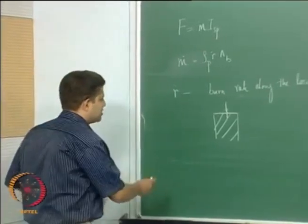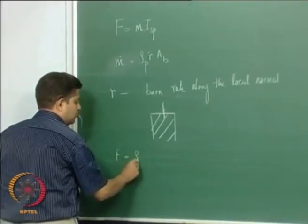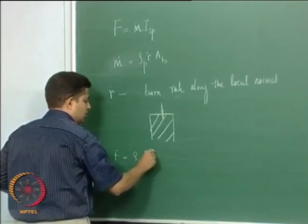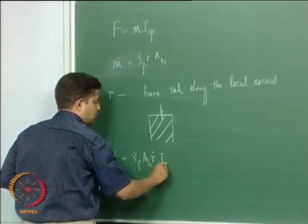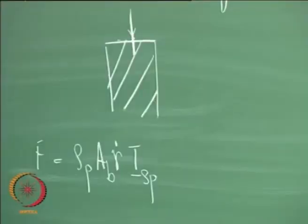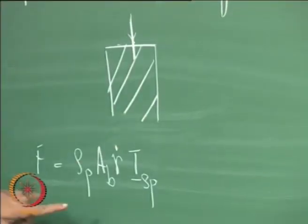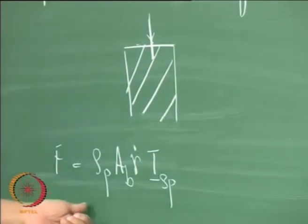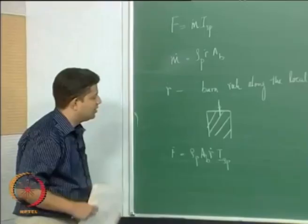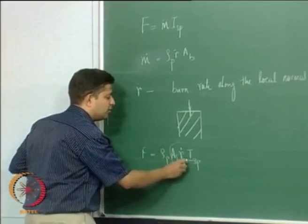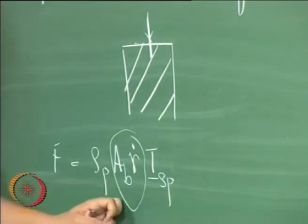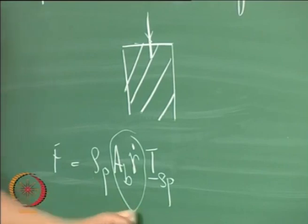So I can rewrite my thrust equation using R_dot and A_B. As I said earlier, if I want to modulate the thrust and I pick a propellant composition, then ISP is fixed and density is fixed. The only parameters that are under the control of the designer are A_B and R_dot. So in this class let us look at how these vary and how we can modulate the thrust.